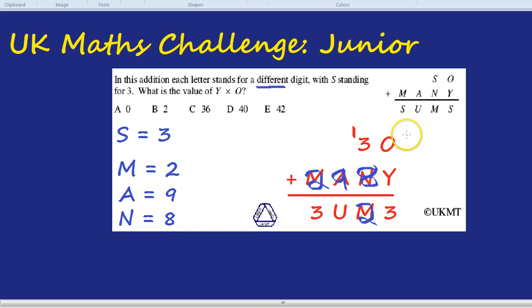So O and Y have to be 6 and 7, or 7 and 6. There's no way of finding out whether it's 6 and 7 or 7 and 6, but it doesn't really matter. Because remember the question was, what's Y times O? Now, whether it's 6 and 7 or 7 and 6, both of those give, when you multiply them, 42. So I believe the answer is 42.